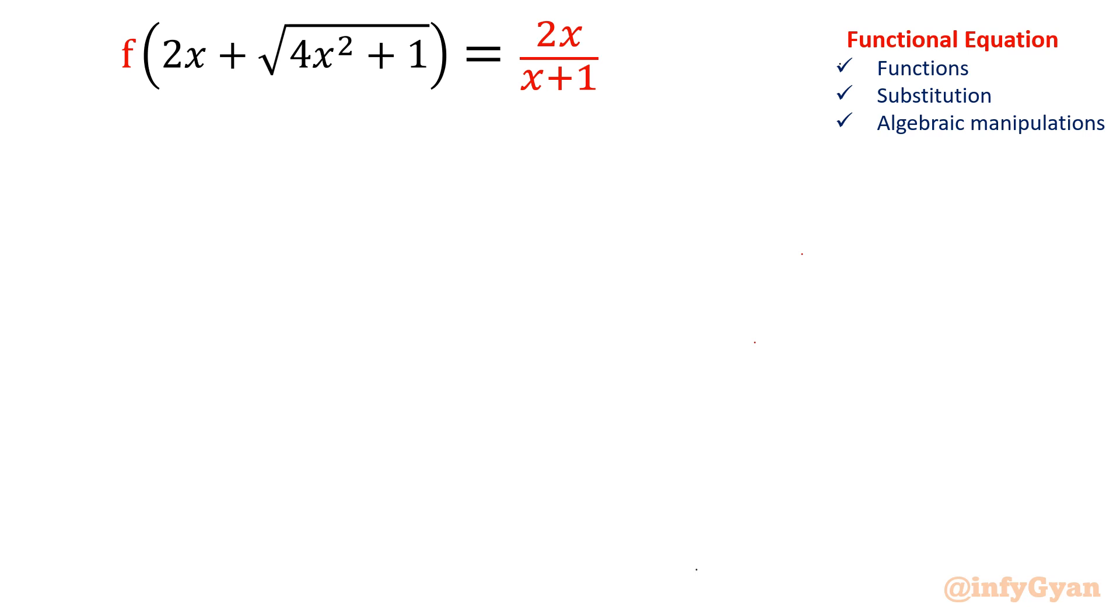Then we will conclude some statements. If you observe the function, 2x plus square root 4x square plus 1 is left hand side. So 2x is linear and square root of 4x square plus 1 is radical function. And right hand side you have got rational polynomial function as you can see denominator is there. Involvement of x in the form of numerator and denominator means rational polynomial function. So let's get started this problem by substitution.